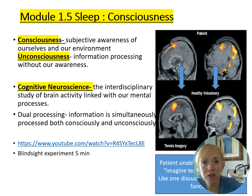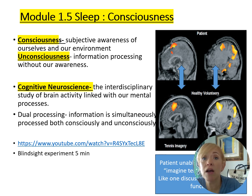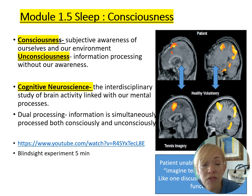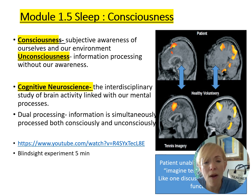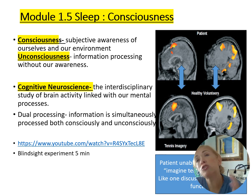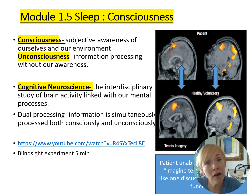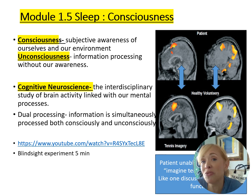Module 1.5 covers sleep and consciousness. Consciousness means you're aware; unconscious means you're not — but you're still processing information. This falls under cognitive neuroscience — the study of brain activity interacting with mental processes. We're always dual processing: consciously processing much of the day, but also unconsciously processing a great deal.